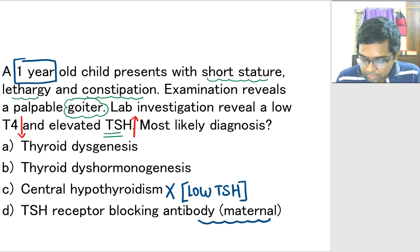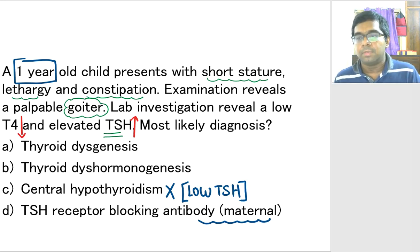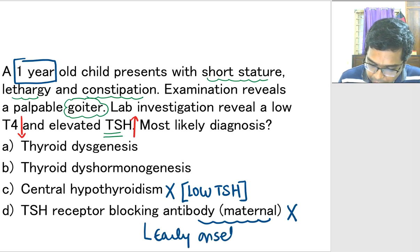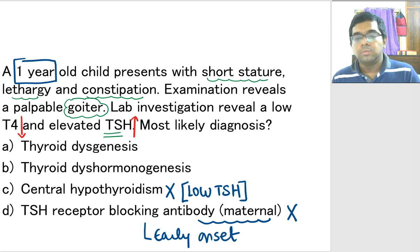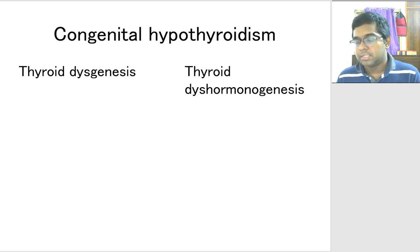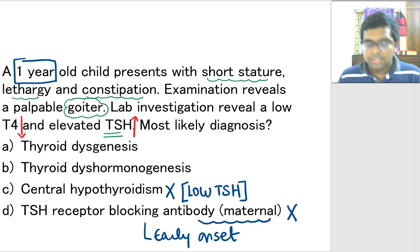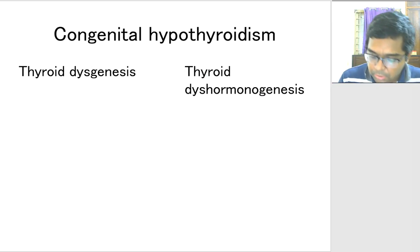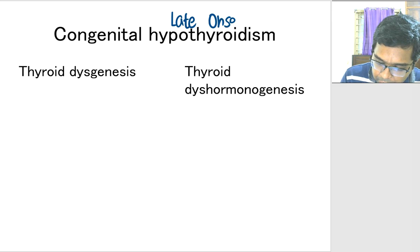If it is a maternal antibody, it can have some effect in the newborn only — maybe for the first few weeks of life. It is not going to have a presentation at one year old. So that option is automatically ruled out. Thyroid dysgenesis and thyroid dysharmonogenesis are both left. The question we are discussing is a late onset form of congenital hypothyroidism — it was not a very severe form, so it presented later. But generally it presents in the neonatal period. It can also have a late onset.